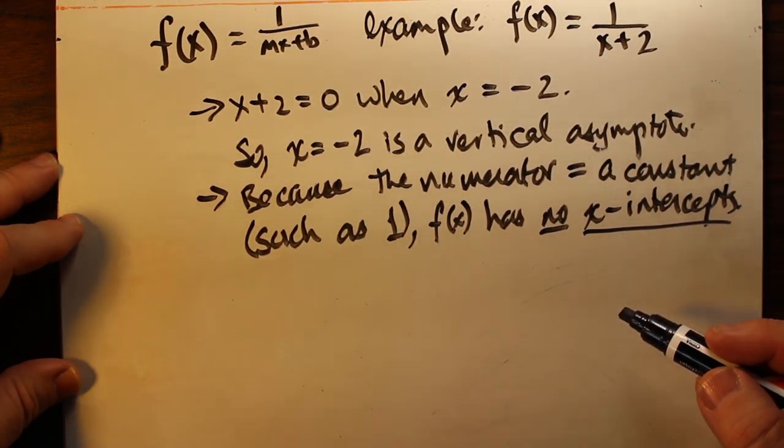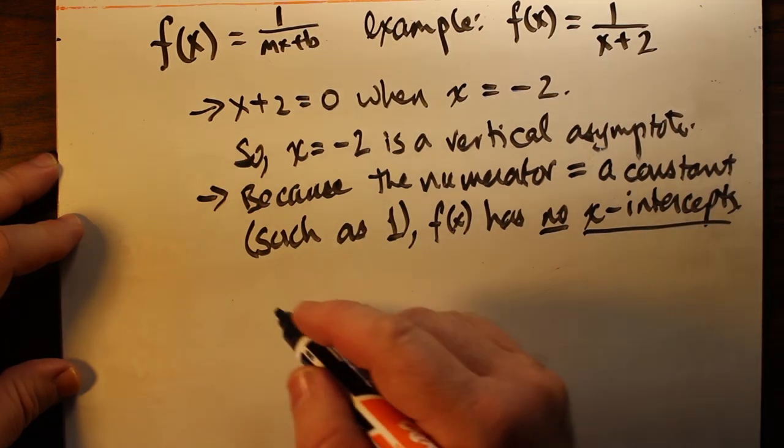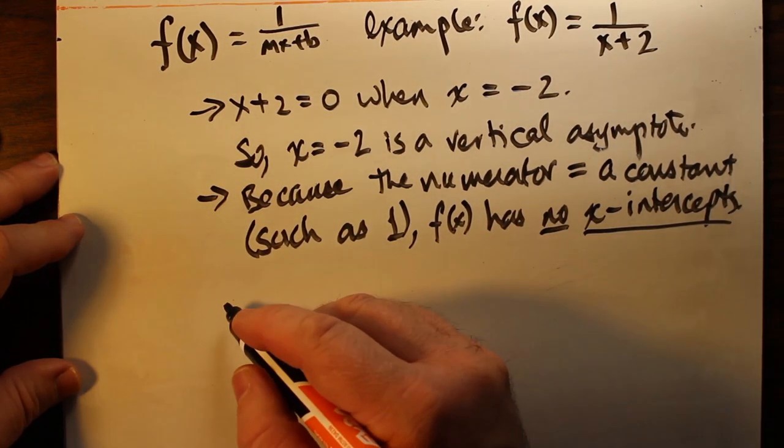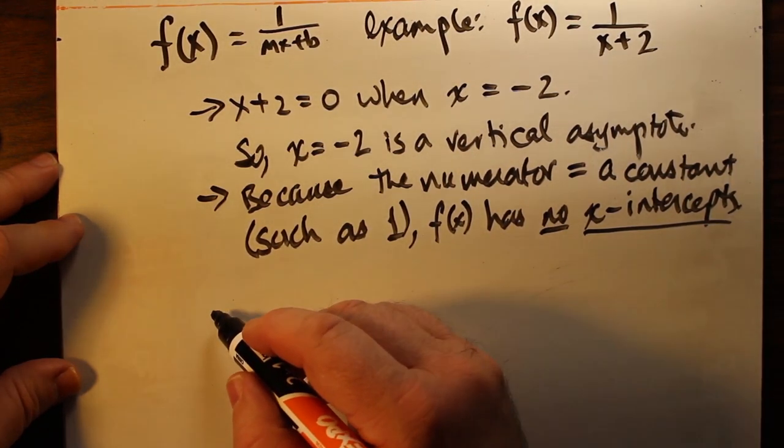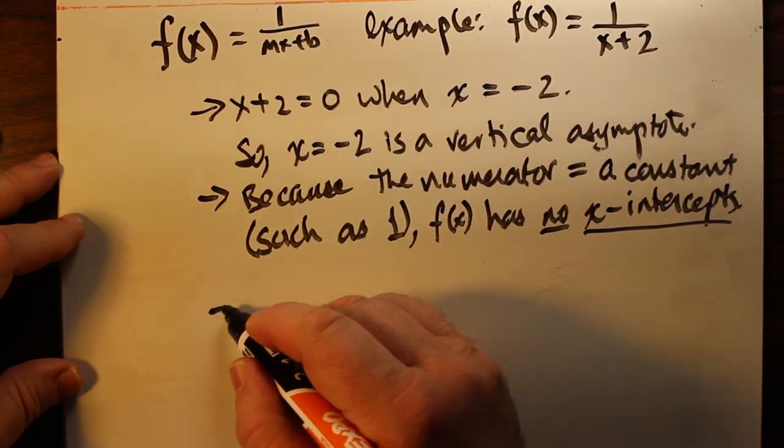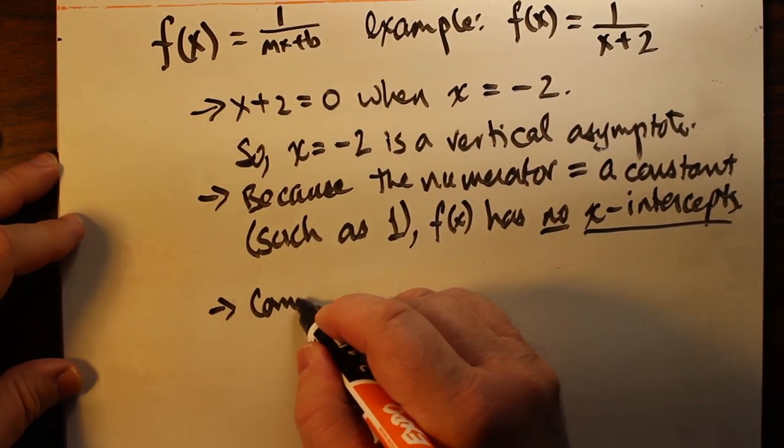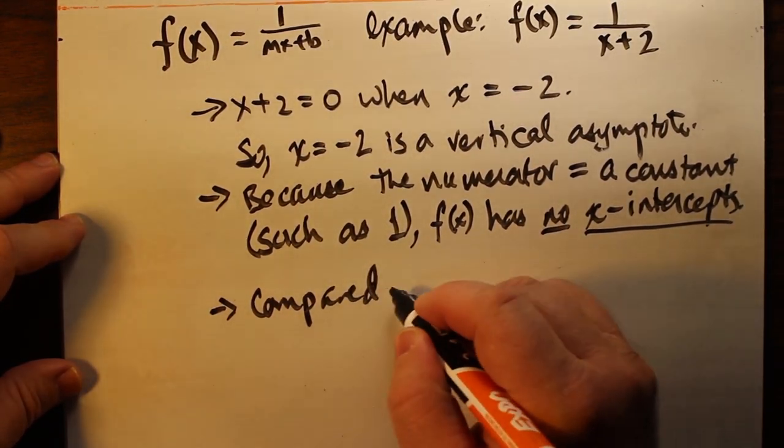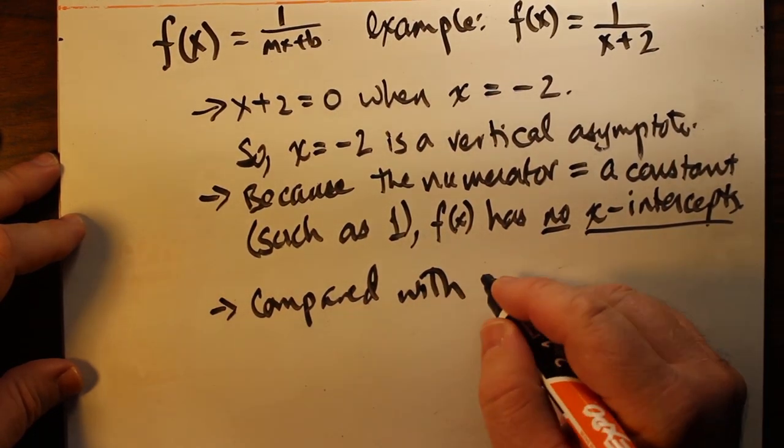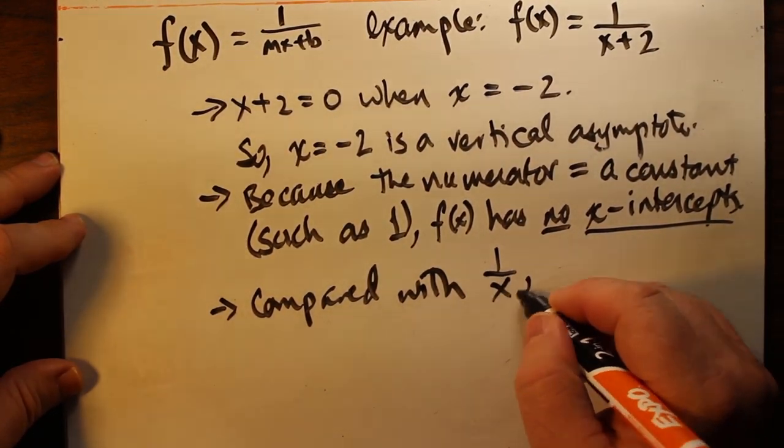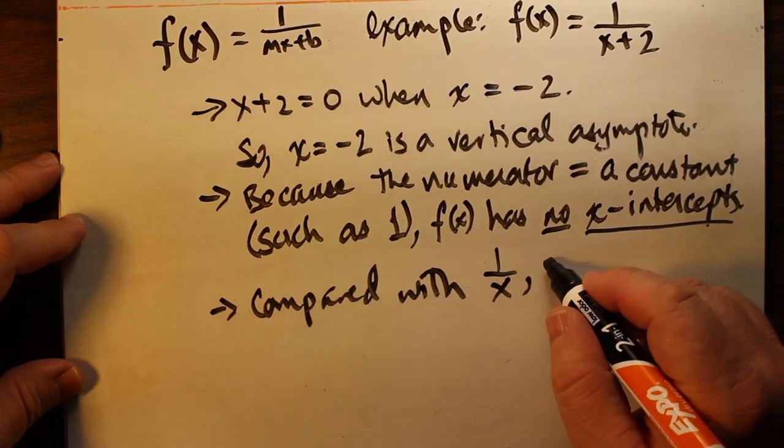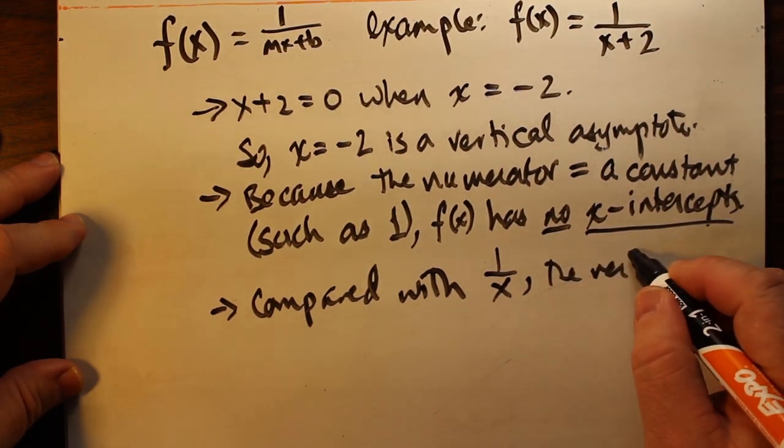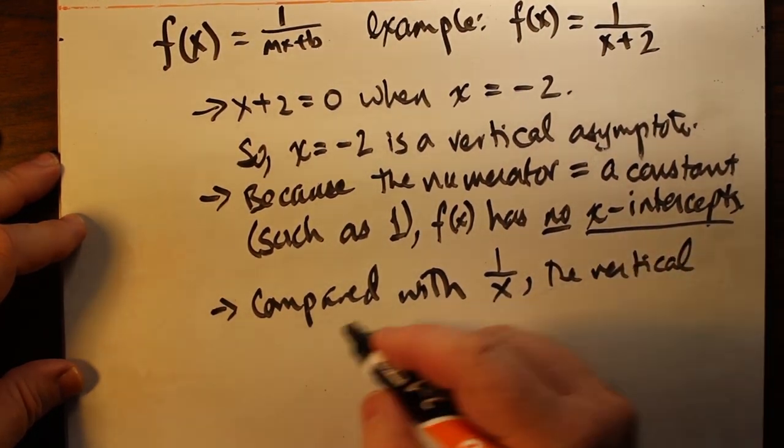We can also discuss limits in this case, but we won't discuss it as much here. If we had to use limits, we would discuss the left and right-hand side of x equals negative two and, as before, discuss the limit as x approaches infinity and the limit as x approaches negative infinity.